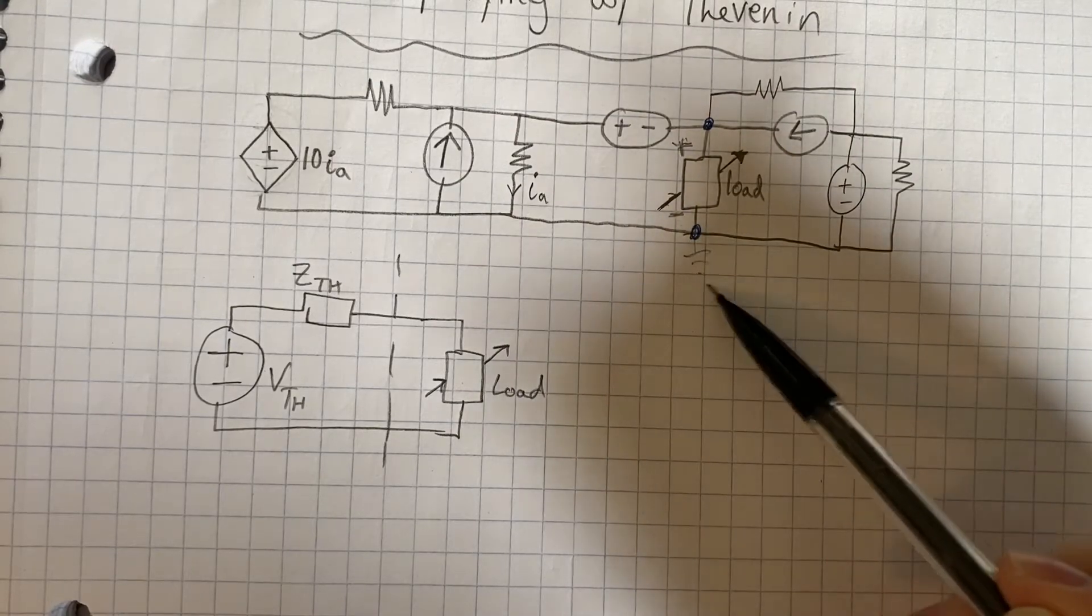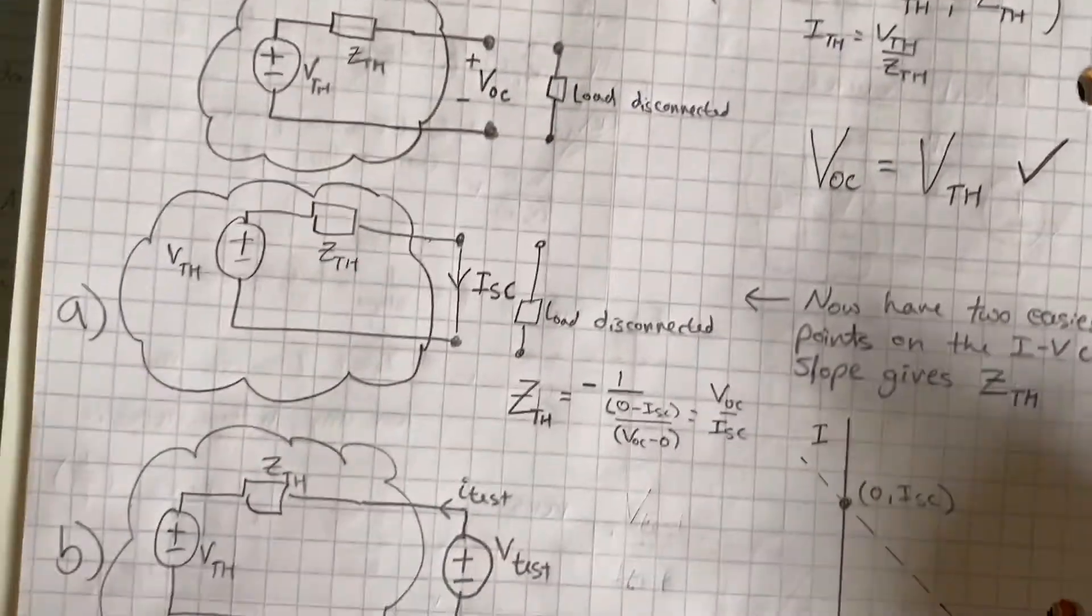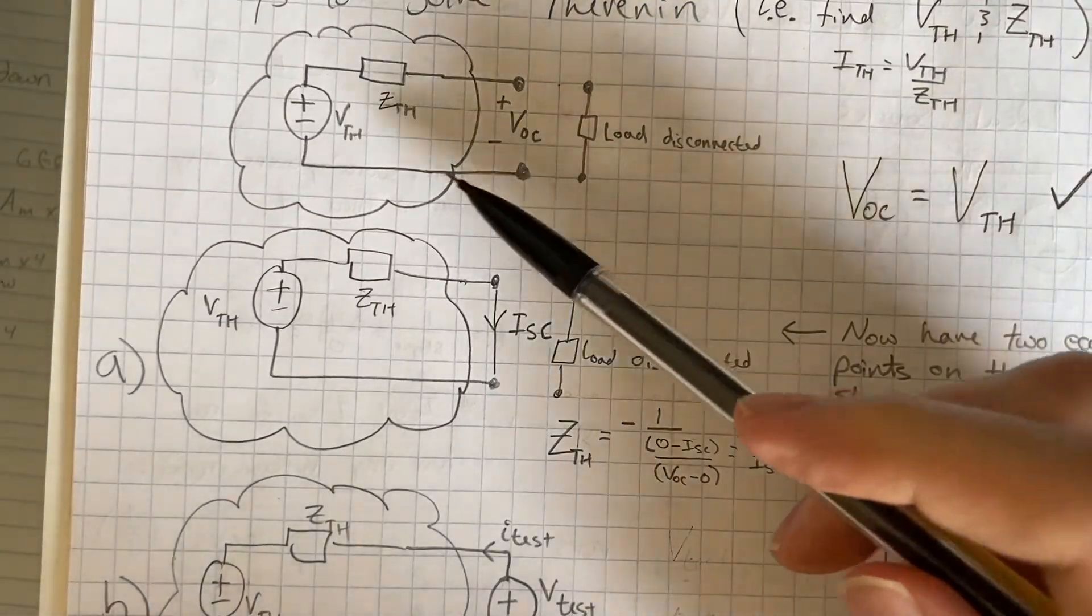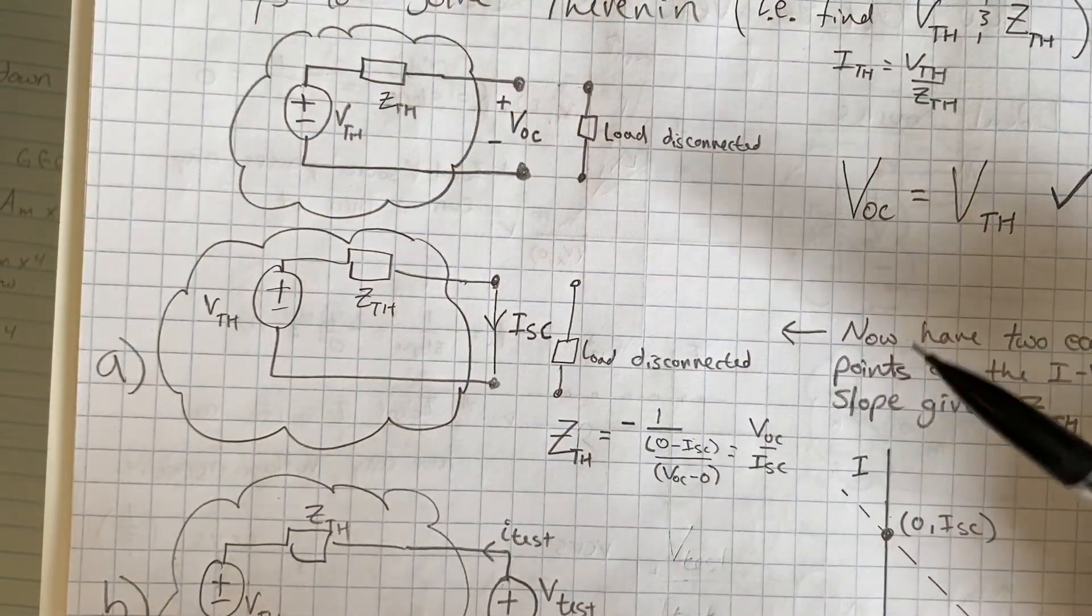This is ground. And once we do that, we have our open circuit voltage, which is our Thevenin voltage. So that was easy.